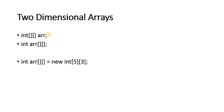We can declare two dimensional arrays in two ways. In the first way, we can have square brackets after the data type, or in the second statement, we can have two square brackets after the variable name or the array name itself. Both ways of declaring an array reference variable are correct.